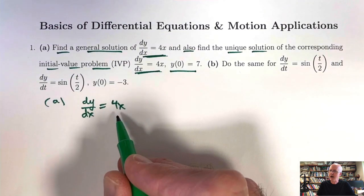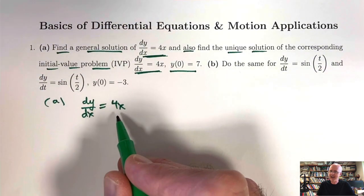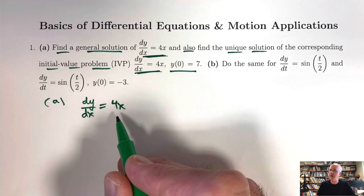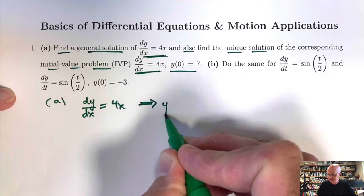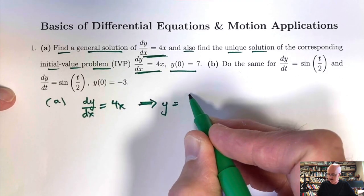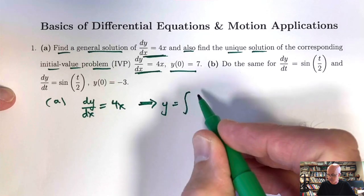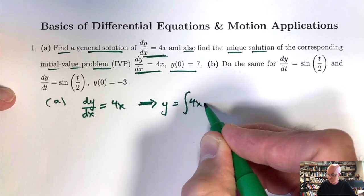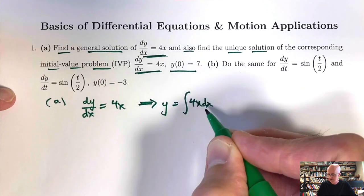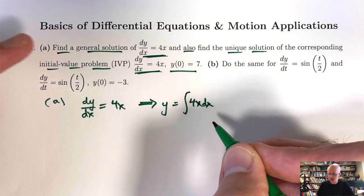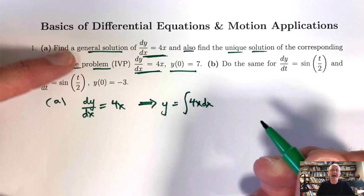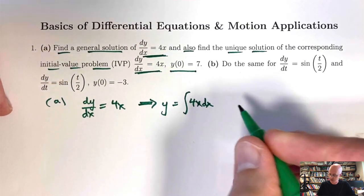If the right-hand side were more complicated, perhaps involving both x and y, the independent and dependent variables, then it becomes a harder question. But for the right-hand side only depending on the independent variable, it's fairly simple. We're seeking a function that is an antiderivative of 4x, so to find it, we do an indefinite integral. We do an indefinite integral initially because we are after a general solution — all possible functions that solve the differential equation.